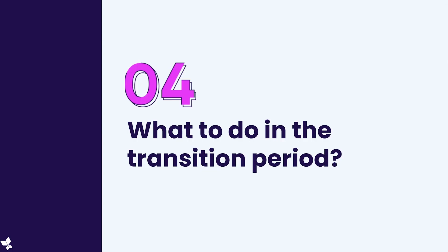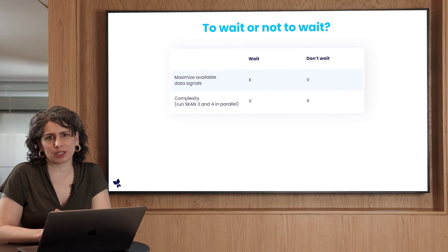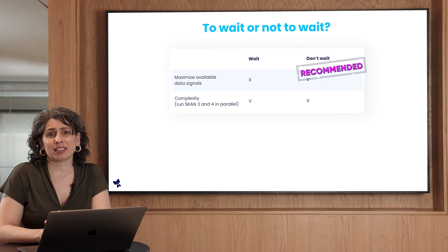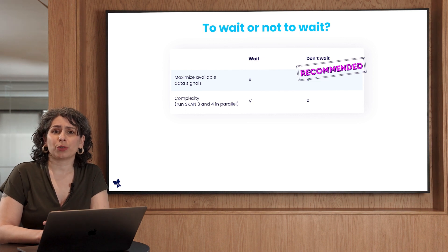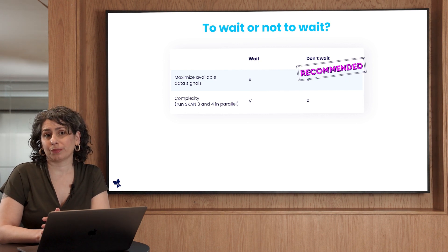So what do you do in the transition period? We recommend not waiting to adopt SKAN 4.0. But in order for it to work, the ad network must generate the ad signature for version 4.0, and the advertised app has to run on a device with iOS version 16.1 or newer.